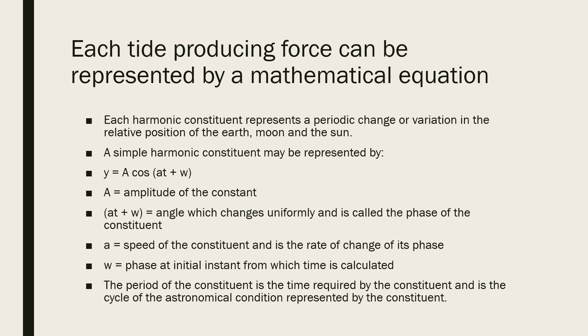A simple harmonic constituent is represented by the equation y = A cos(at + w), where A is the amplitude of the constant, (at + w) is the angle which changes uniformly and is called the phase of the constituent, and a is the speed of the constituent and is the rate of change of its phase.